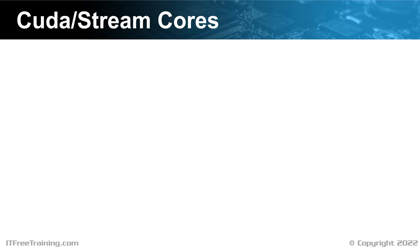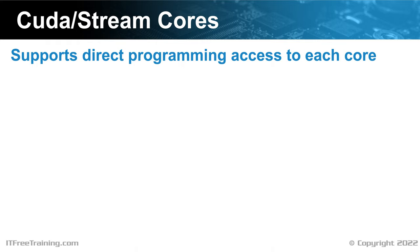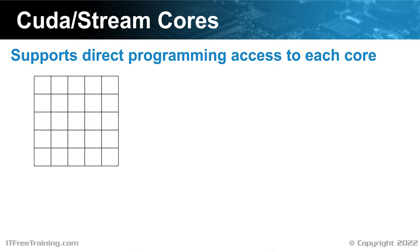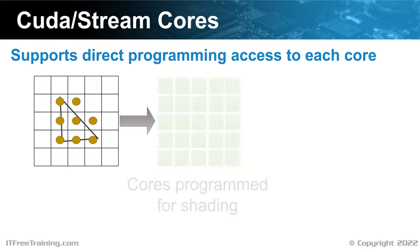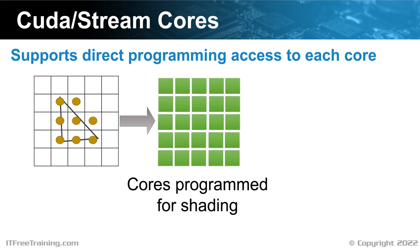NVIDIA GPUs use CUDA cores and AMD GPUs use stream cores. Each core supports direct programming access. Older video cards had fewer programmable cores and the output was not very customizable compared to what can be achieved with modern cores. Consider a triangle we want to render — it is mapped to the pixels on the screen, then put through cores programmed for shading, which essentially colors the pixels. There are many different ways this can be achieved, and being able to run the cores with whatever shader you want gives you a lot of flexibility.